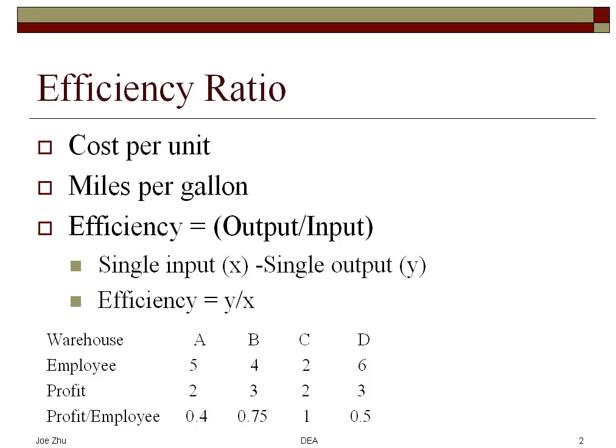The multiplier DEA models were developed by using the efficiency ratio — for example, cost per unit or miles per gallon. You would define the efficiency as the output over the input. So if you have a single input and single output, you would define the efficiency as Y over X.